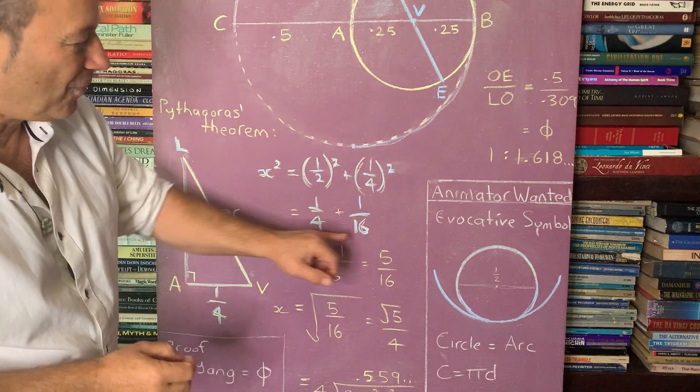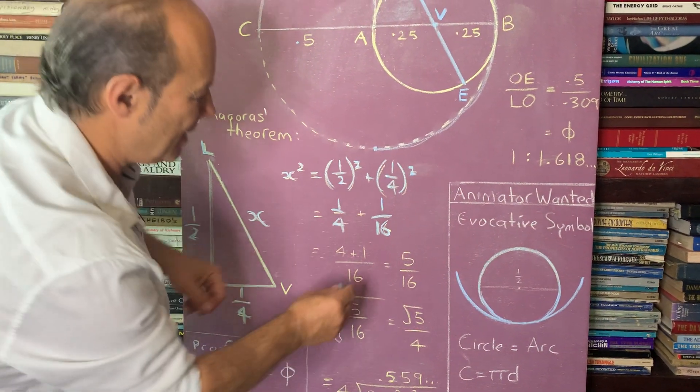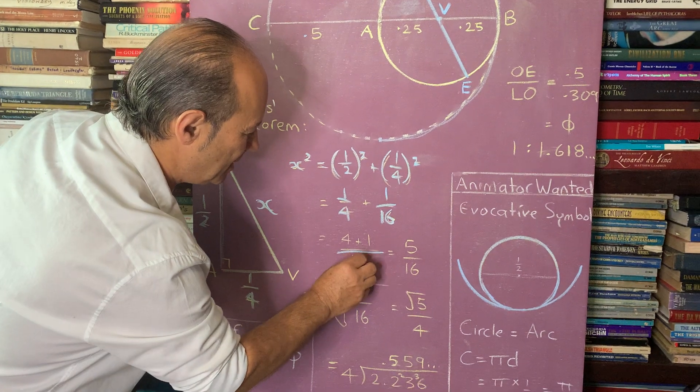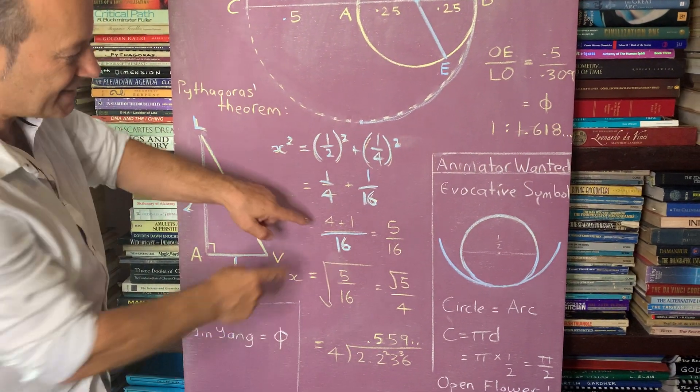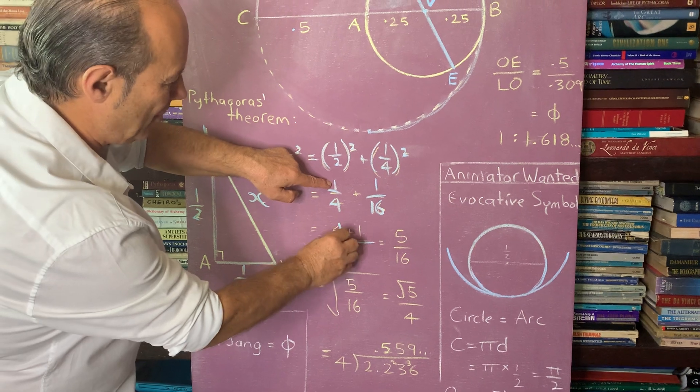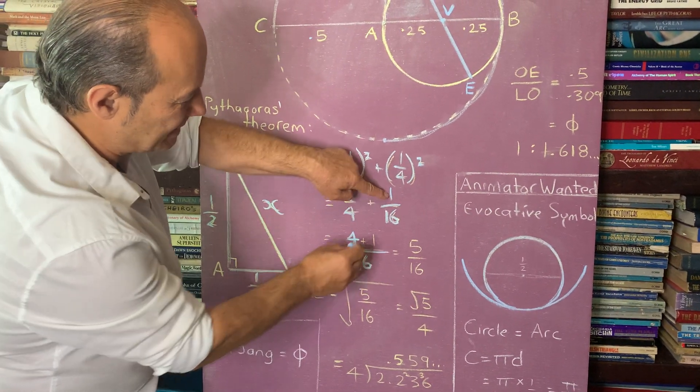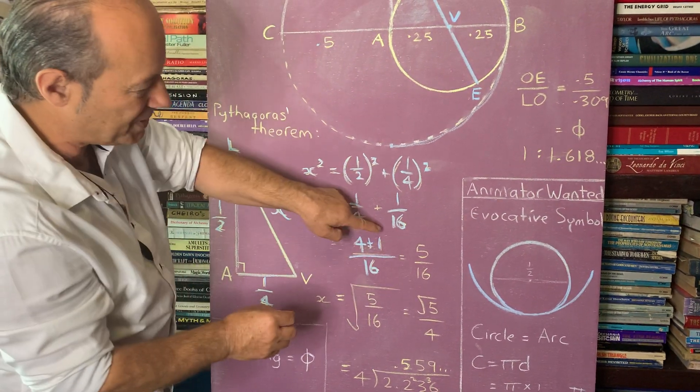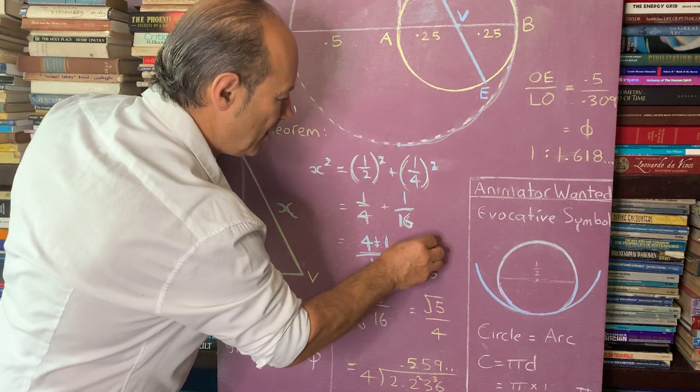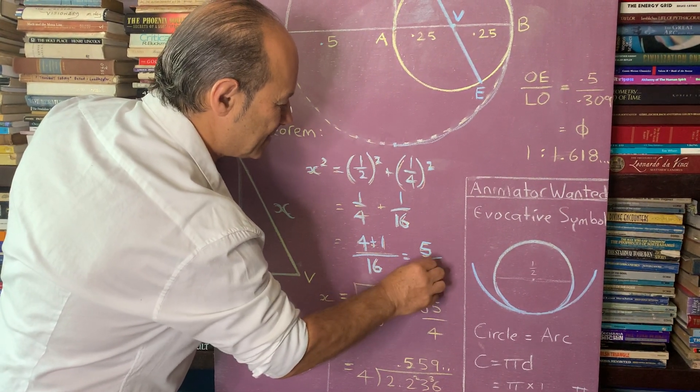But we have to make the 4 and the 16 the same. So we have to have the common denominator. So if this is 16, I've got to multiply that by 4. And we've already got 1 sixteenth here. So we say, what's 4 plus 1? We know we've got 5 on 16th. So it's less than 1.